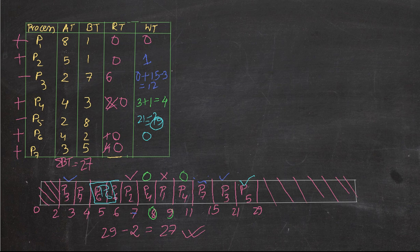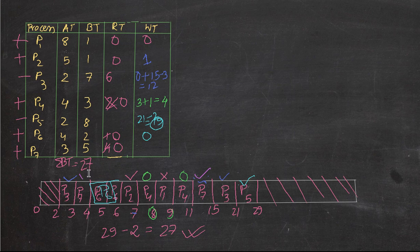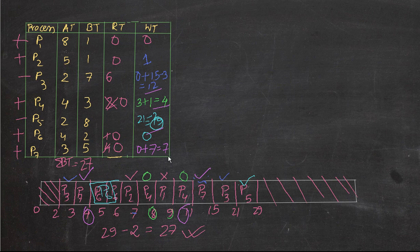For P7: it has appeared twice. First occurrence: 3 minus 3 equals 0. Second occurrence: visiting time 11 minus finishing time 4 equals 7. Total waiting time for P7 is 0 plus 7 equals 7. So the waiting times are: P1=0, P2=1, P3=12, P4=4, P5=19, P6=0, P7=7.